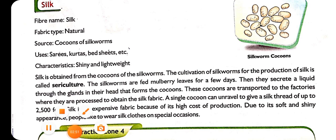Silk is also a natural fiber. Silk is obtained from the silk worm. The sources of silk are the cocoons of the silk worm. The uses of silk are to make kurtas, bed sheets, sarees, and similar things. The characteristics of silk are that it is very shiny and light in weight.